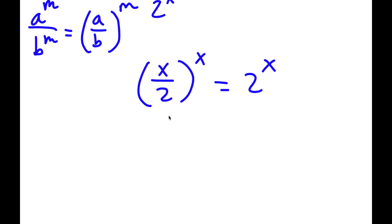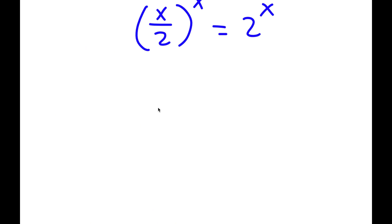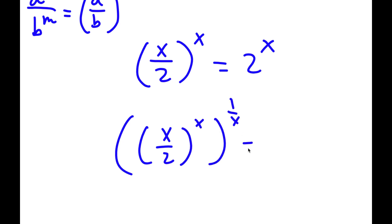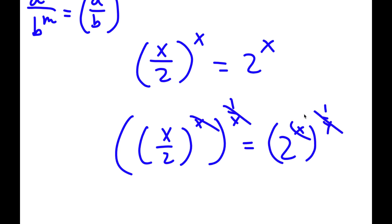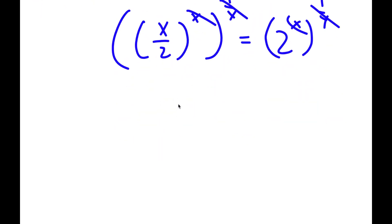Now, I'm going to take the power of 1 over x on both sides. So now I have x over 2 to the power of x to the power of 1 over x is equal to 2 to the power of x to the power of 1 over x. Now, x and 1 over x cancel out on both sides, so I'm left with x over 2 is equal to 2.